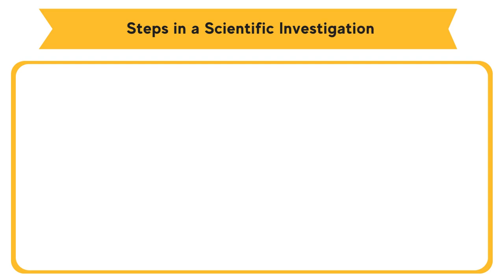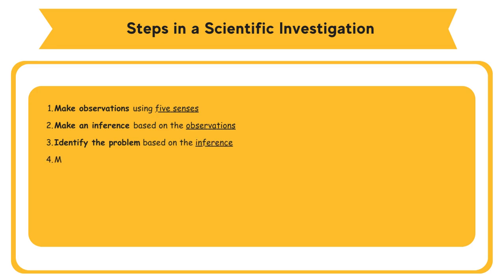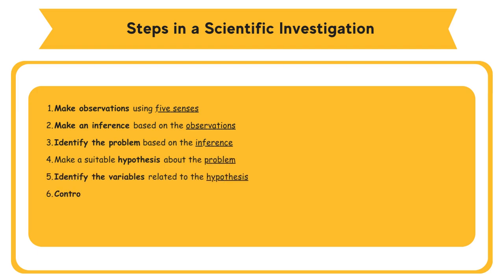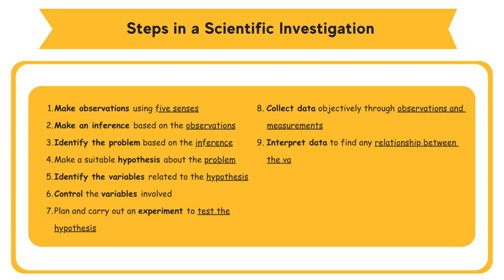Steps in a scientific investigation: make observations using five senses; make an inference based on the observations; identify the problem based on the inference; make a suitable hypothesis about the problem; identify the variables related to the hypothesis; control the variables involved; plan and carry out an experiment to test the hypothesis; collect data objectively through observations and measurements; interpret data to find any relationship between the variables; make a conclusion whether the hypothesis is accepted or rejected; and write a report.